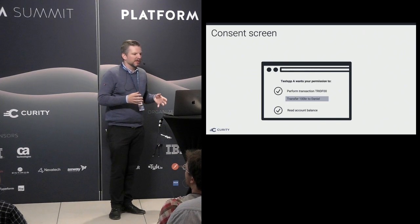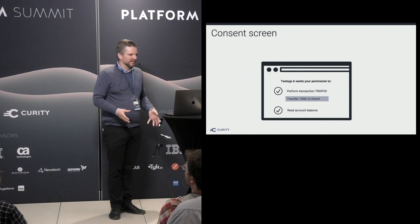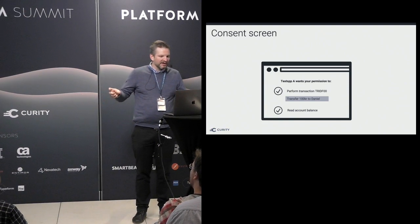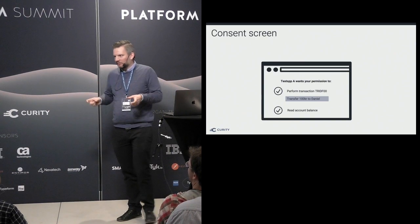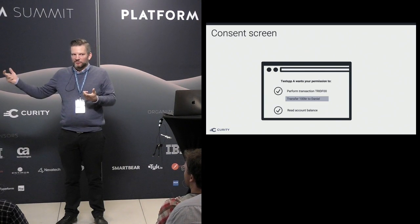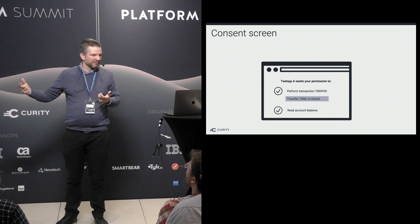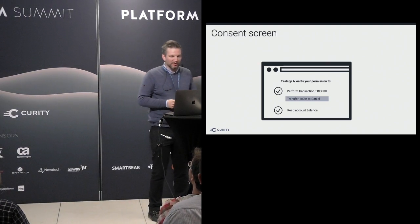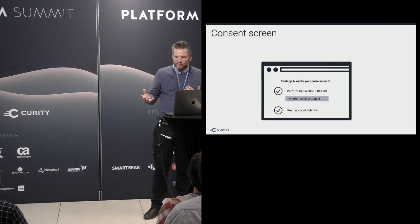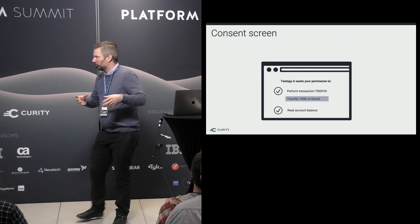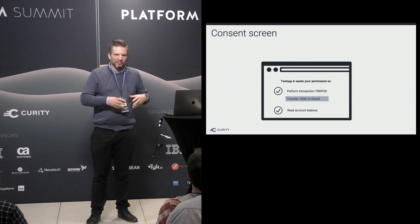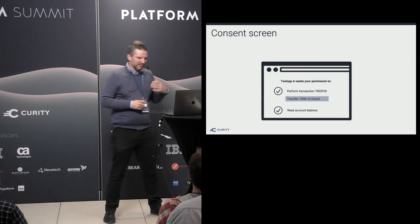The consent screen can now look like this: we're asking for a scope with transaction ID 'TR_ID_foo,' and with the description of that scope we can say 'with this token I will transfer 100 kronors to Daniel' — and also read account balance. When the user consents to this screen, a token is issued based off of this consent and this delegation, and the access token can now only perform this specific type of operation.